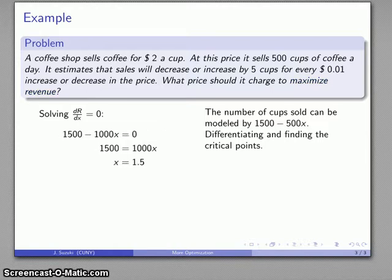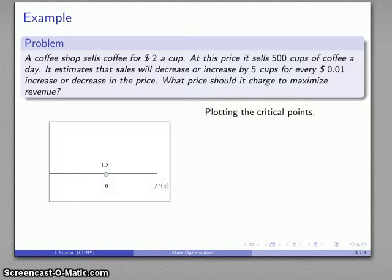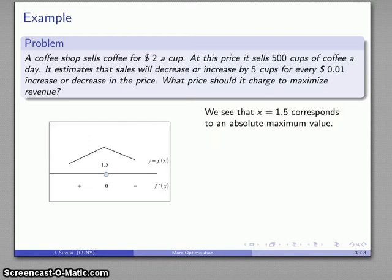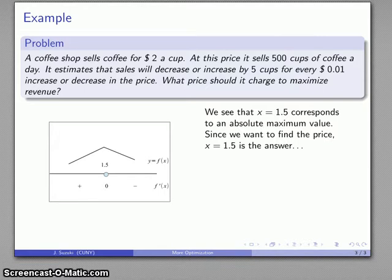At this point this is a graphing problem. I have the critical point x equals 1.5, and I want to find the sign of the first derivative. That's going to be positive and negative after. So my stick figure sketch of the graph looks something like that, and there's my revenue function. The maximum y value, the maximum value of the function, occurs right here at x equals 1.5. So that's where I want to set the price at, it gives you a maximum value. x equals 1.5 is an answer to the actual question: what price should we charge?